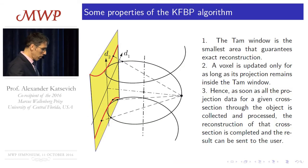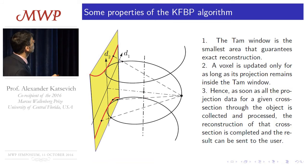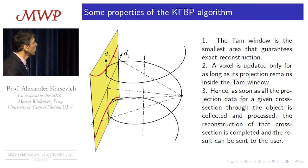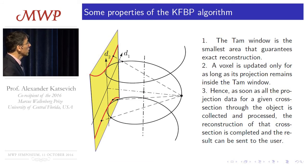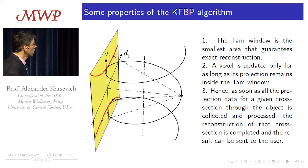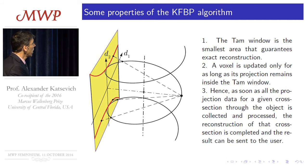Let's discuss some properties of the KFBP algorithm. It is based on the so-called TAM window. This is the source trajectory — the helix. Pick any source position and consider two turns of the helix: one full turn above it and one below. Project the upper turn onto the detector — you get this red curve — and then the bottom turn gives you the bottom curve. The region in between is called the TAM window.